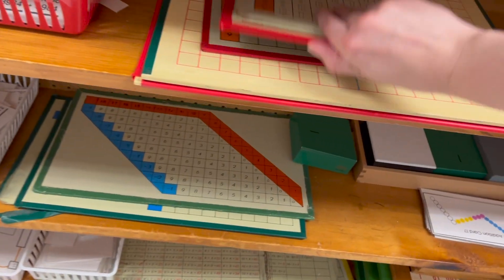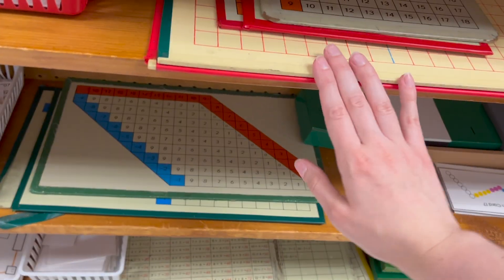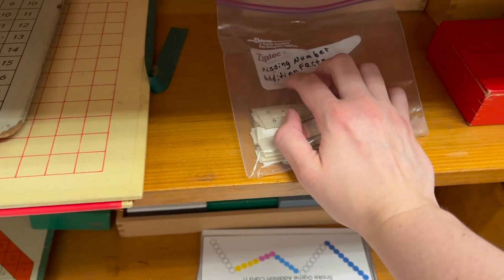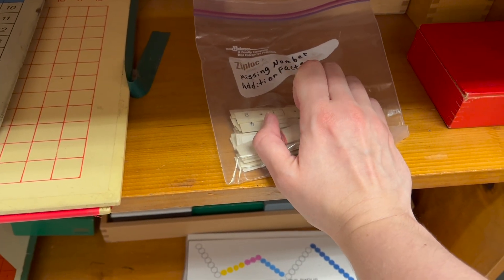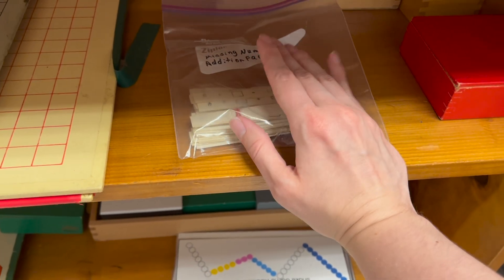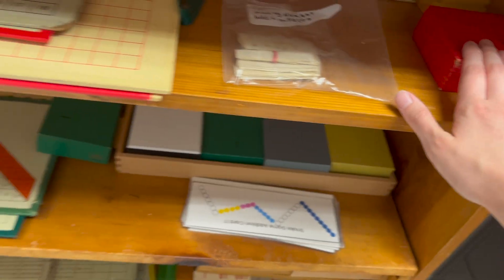And then all the finger charts and the strip board, addition strip board and the pieces. First years at the end of the year, like first graders love missing number addition. They just love it. So many kids do it all the time. I don't know why, well, it's good, right? But they like the missing number addition and then the tiles for the boards.